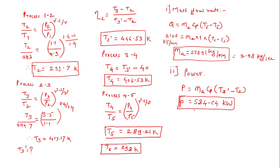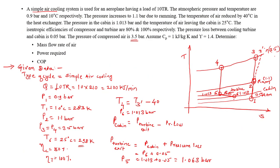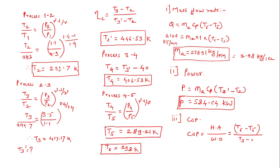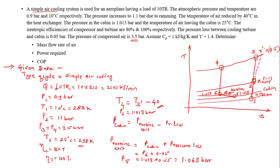The COP is the refrigerating effect divided by the work done: COP = (T6 − T5) / (T3' − T2). Substituting the temperatures, COP ≈ 0.06. The tricky parts of this problem are the 40°C temperature reduction in the heat exchanger and the pressure drop between the turbine and cabin. Once these two are understood, the problem is straightforward.